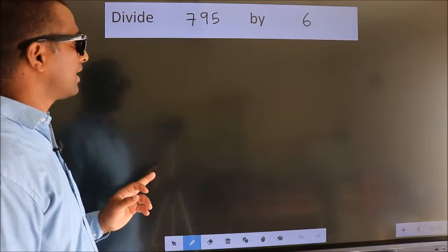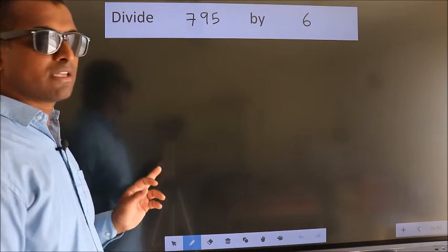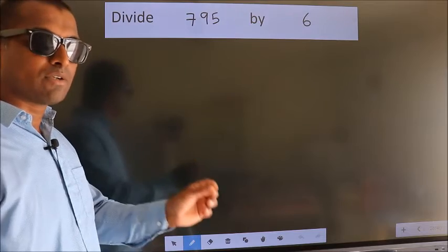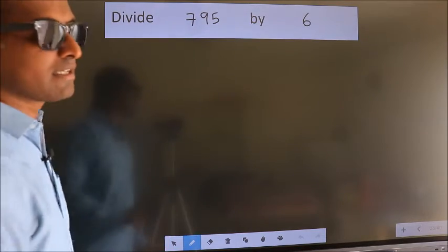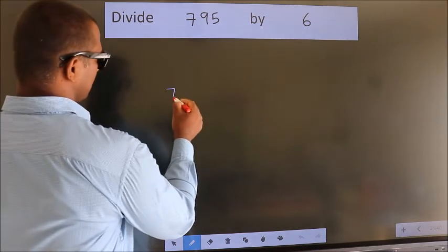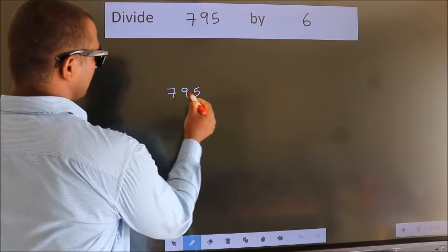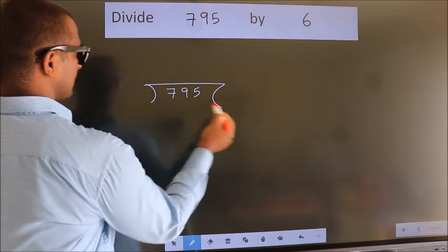Divide 795 by 6. To do this division, we should frame it in this way. 795 here, 6 here.